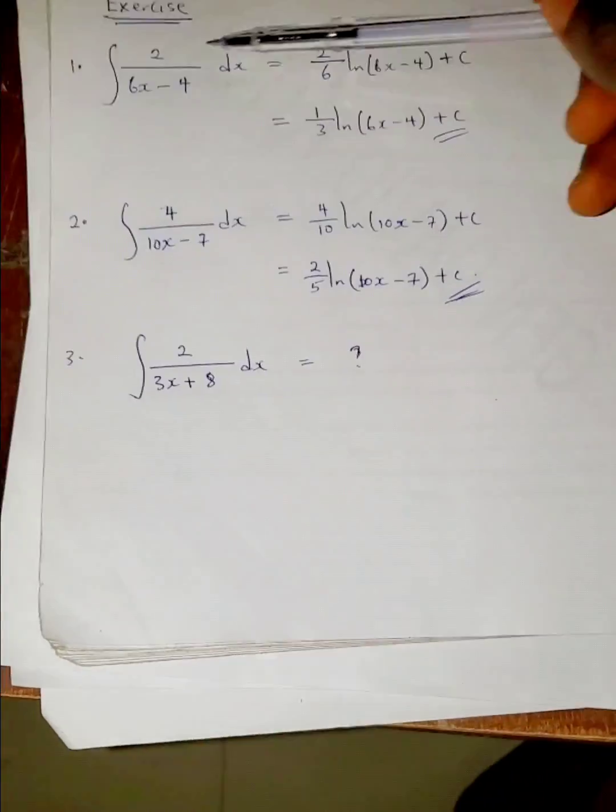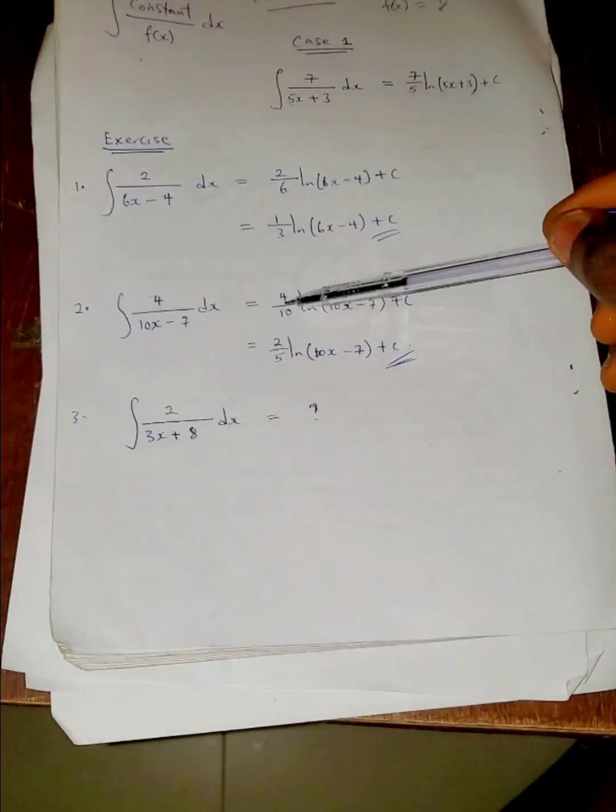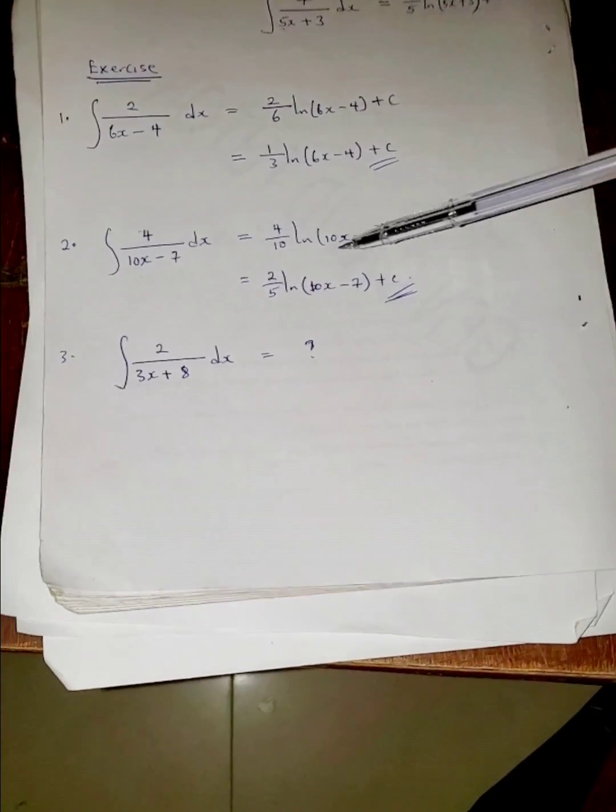Now we see this one as well. That's 2 over coefficient of x here, which is 6, ln of all the denominator. The same thing with this, you have it to be 4 over 10 ln of the denominator.